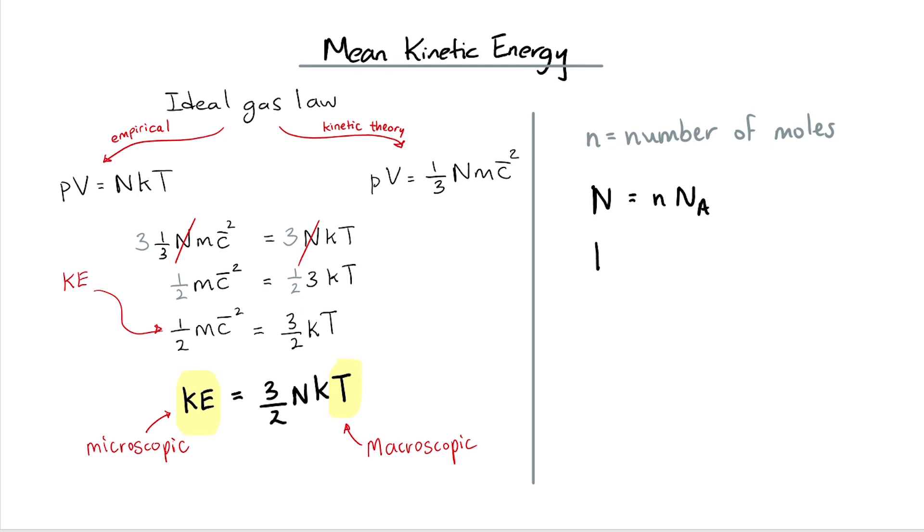But then, the Boltzmann constant is the molar gas constant divided by the Avogadro constant. We now have a new expression for the ideal gas kinetic energy.